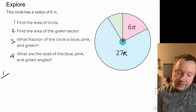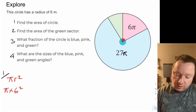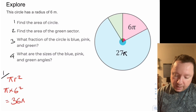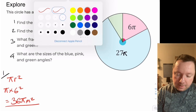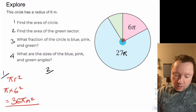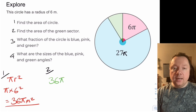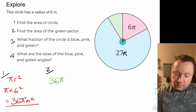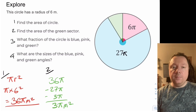Welcome back. Find the area of the circle — nice and easy, pi r squared. It's pi times 6 squared because the radius is 6, so we've got 36 pi metres squared. That's question one. For question two, find the area of the green sector: the whole area is 36 pi, so take away the other two sectors — 27 plus 6 is 33 — so minus 27 pi and minus 6 pi leaves 3 pi. So the green section is 3 pi metres squared.